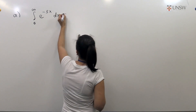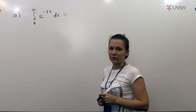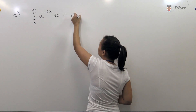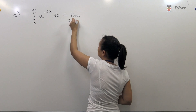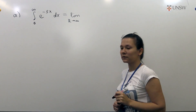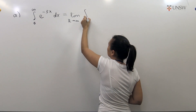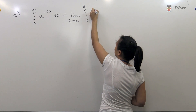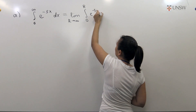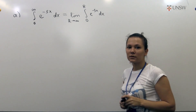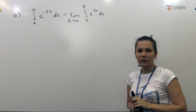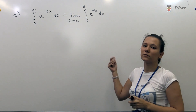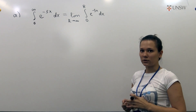So what is the definition of an improper integral? We define it as the limit when r goes to plus infinity of the integral from 0 to r of the same function. And if this limit exists and is finite, we say that our improper integral converges, and the value of this limit is the value of our integral.